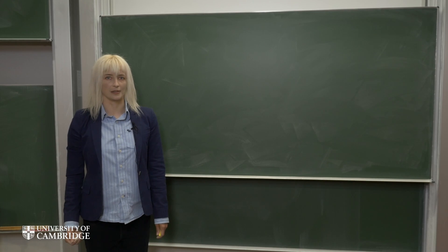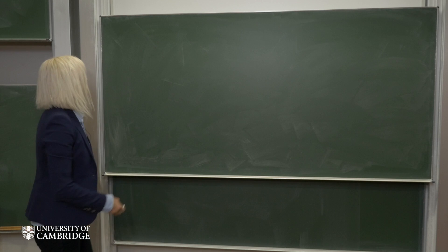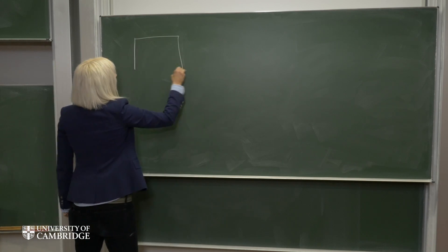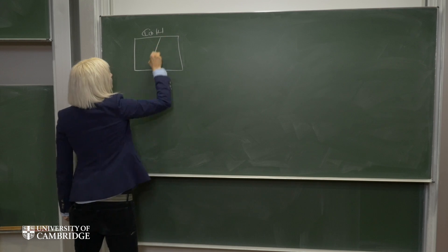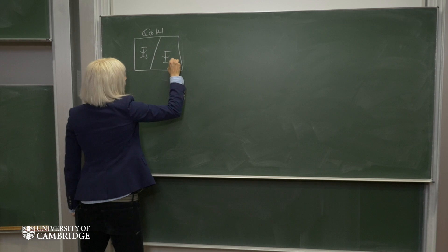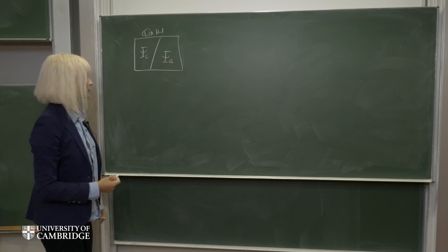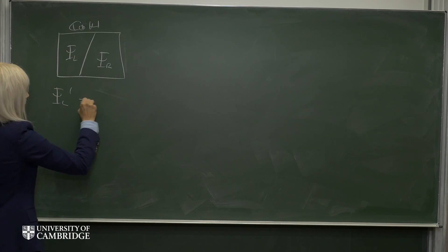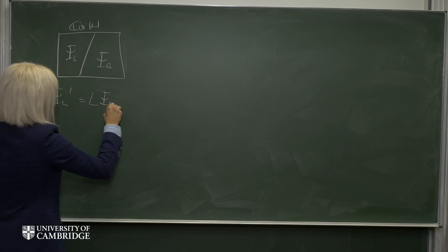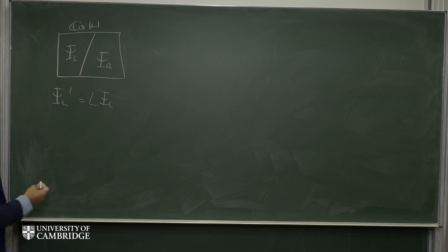So we just showed that the complex quaternions split into two pieces: left and right-handed Weyl spinors. The left-handed spinor transforms like this, and the right-handed spinor transforms like this.